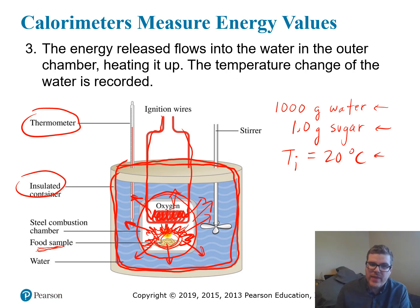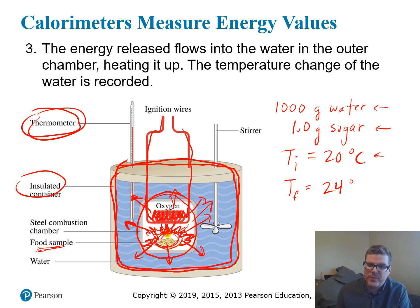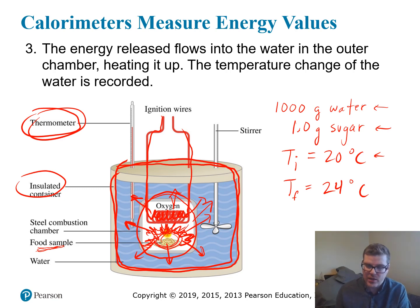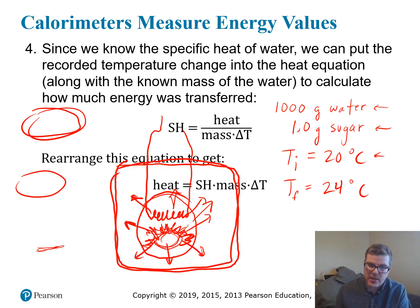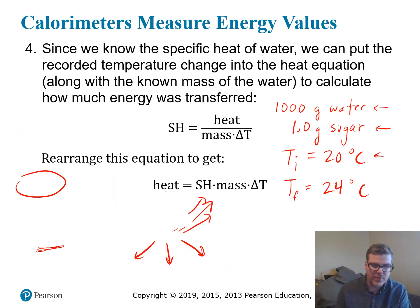The temperature change of the water is then recorded. We look at the thermometer again and measure the final temperature — in this case, we'll say it went up to 24 degrees Celsius. These are really the only observations we need to perform the calculation and figure out how much energy was in the sugar. The only other piece of information needed is the heat equation and the specific heat for water.